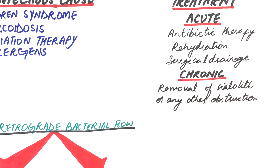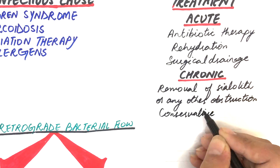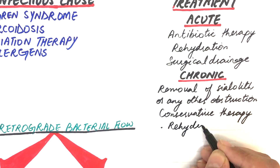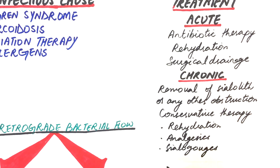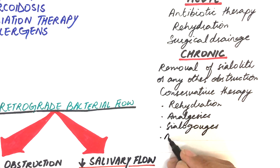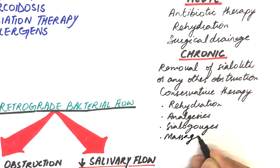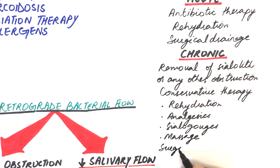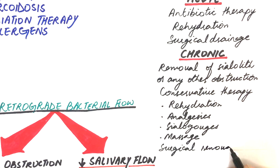Other management includes conservative therapies like rehydration, analgesics, sialogogues to stimulate salivary secretions, and regular gentle massage. If these conservative methods cannot control chronic sialadenitis, then surgical removal of the affected gland might be considered a necessity.